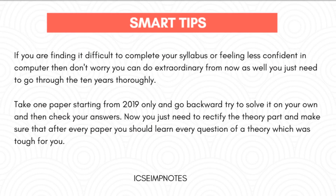You can do extraordinary from now as well. You just need to go through the last 10 years thoroughly — take one paper starting from 2019 and go backward. Try to solve it on your own and then check your answers. Rectify the theory part and make sure that after every paper you learn every theory question that was tough for you.